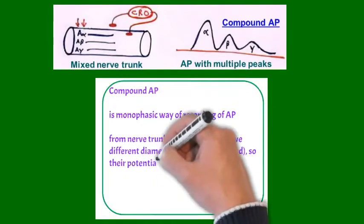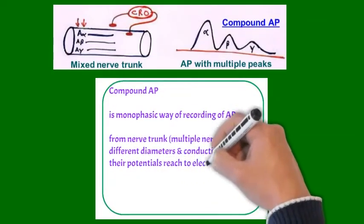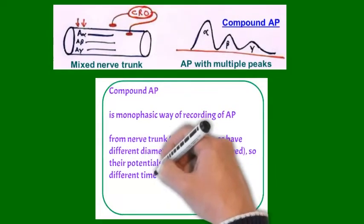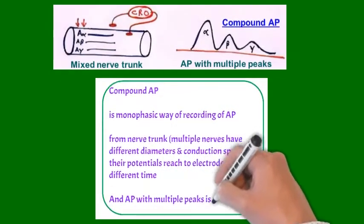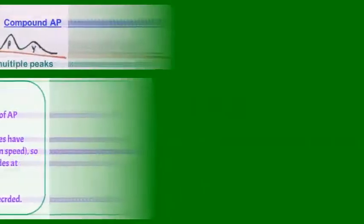So their potentials reach the recording electrodes at different times, and that's why action potential with multiple peaks is recorded, which is compound action potential.